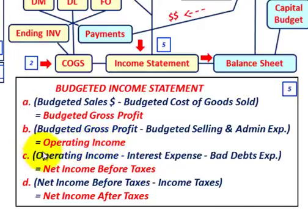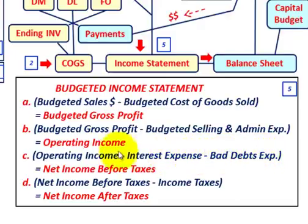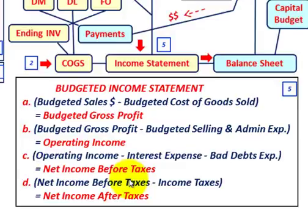Taking your operating income, the next step is to subtract interest expense and bad debt expense, giving you your net income before taxes. Then in the final step, you subtract income taxes from net income before taxes to arrive at your net income after taxes.